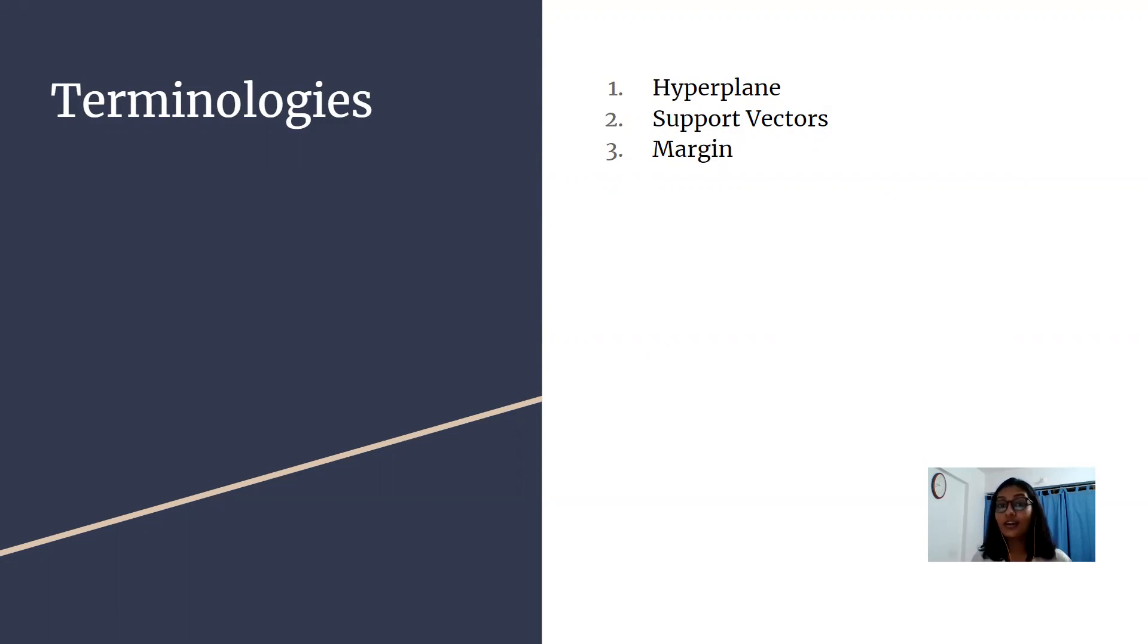Now the third terminology is margin itself. A margin is a separation gap between two lines on the closest data points. It is calculated as the perpendicular distance from the line to support vectors or closest data points. In SVMs, we try to maximize this separation gap so that we get the maximum margin.